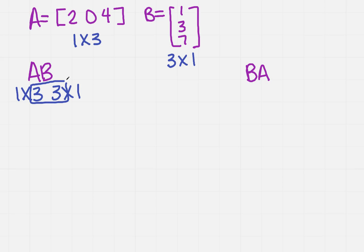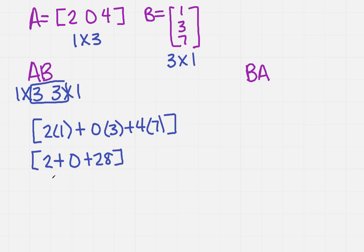If it's a 1 by 1 matrix, that means we're going to take the row and add each one down the column. Let me explain that in numbers. I take 2 times 1 plus 0 times 3 plus 4 times 7, and that becomes 2 plus 0 plus 28, which is just 30.